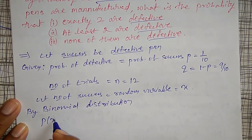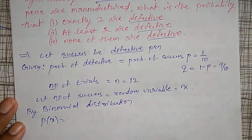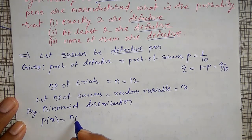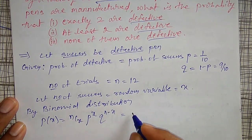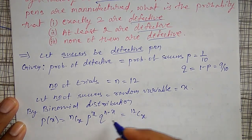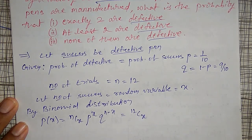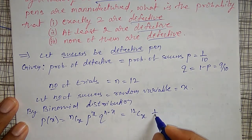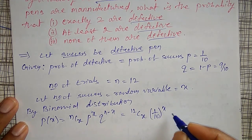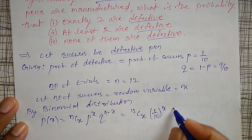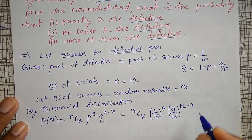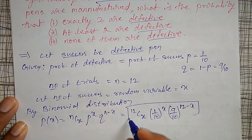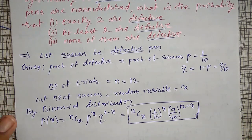By binomial distribution, the probability of X is given by n C x multiplied by P raised to x multiplied by Q raised to n minus x. Here n is 12, so it is 12 C x, P is 1/10 raised to x, and Q is 9/10 raised to 12 minus x. This is the probability function where x changes from 0 to 12.